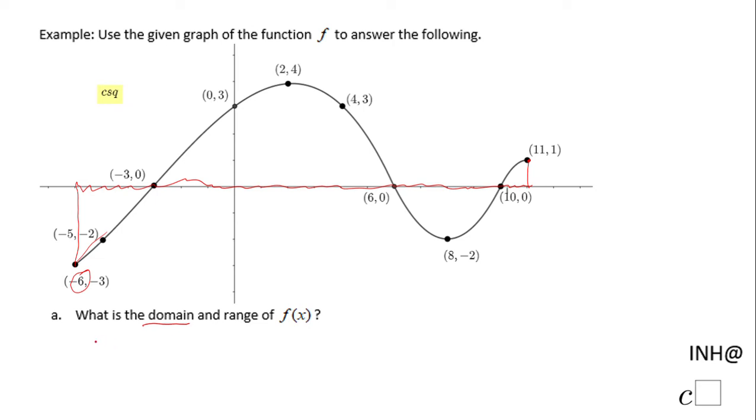So how are we going to write that? We have two ways. One is this way using the interval notation negative 6 to 11. Another way we're going to use an inequality format: negative 6 less than or equals x less than or equals 11. This is the domain of this function.